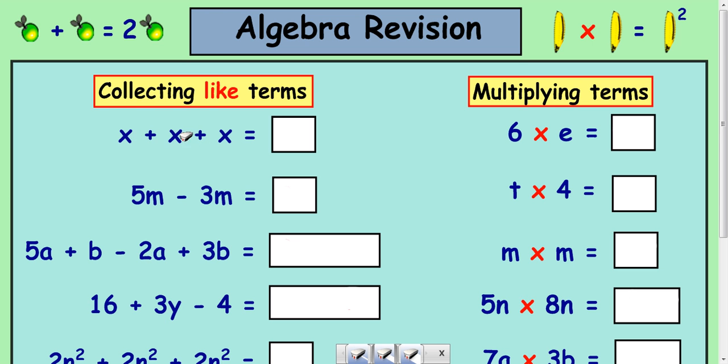Now you can add terms that are exactly the same, you can't add terms that are different. So x plus x plus x is 3 lots of x, so we write it like this. The 3 goes in the front, not behind an x next to it.